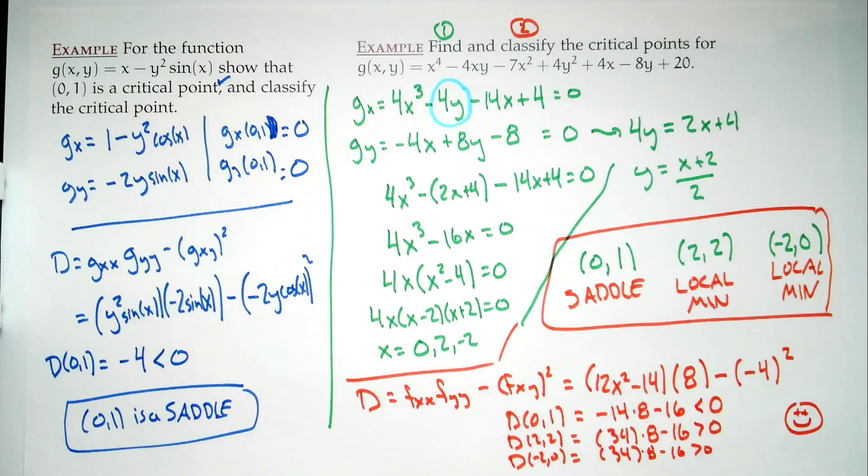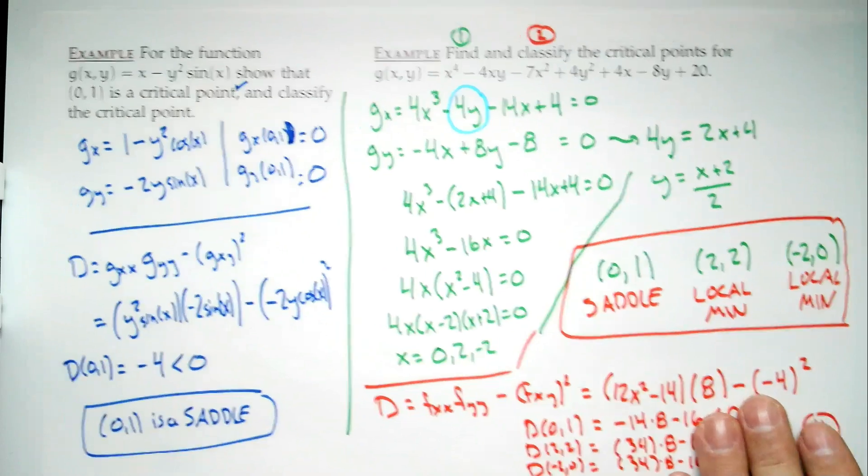So we have one saddle point at (0,1) and two local minima at (2,2) and (-2,0). That's enough time — let's get going on the next one and see where we end up.